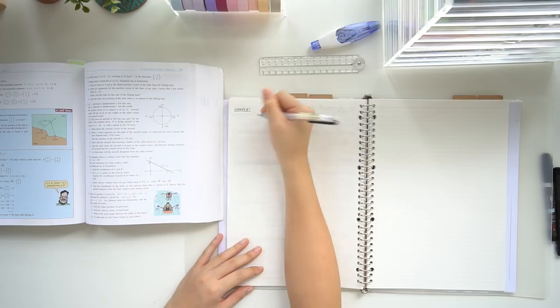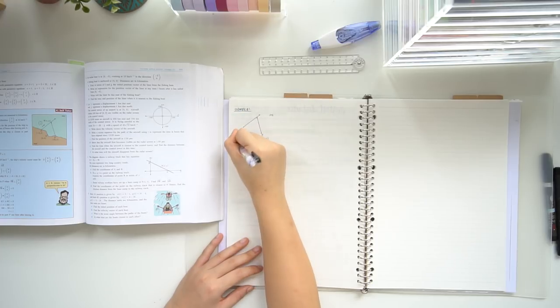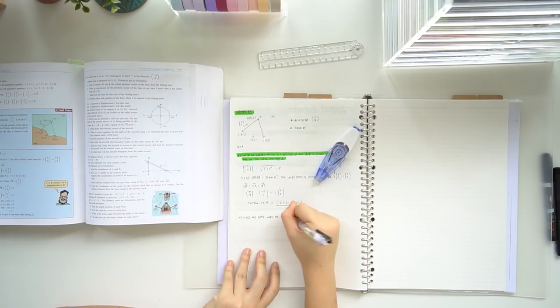So in the worked example, if you don't need to write down every single step because you already know it, then don't write it down, because it's just going to waste more time and it's not going to be beneficial to your revision.